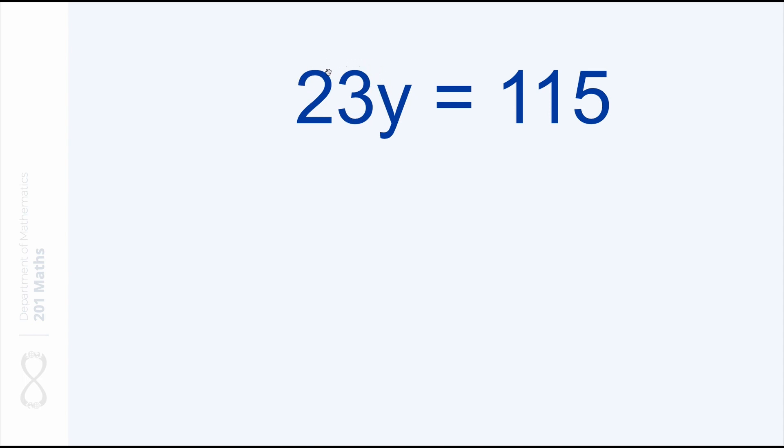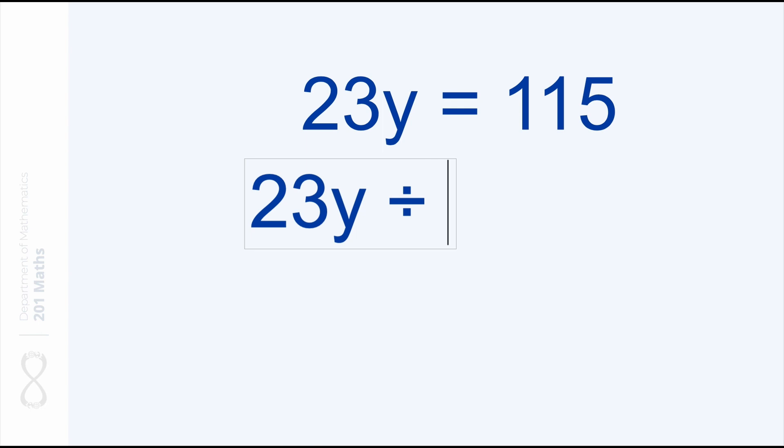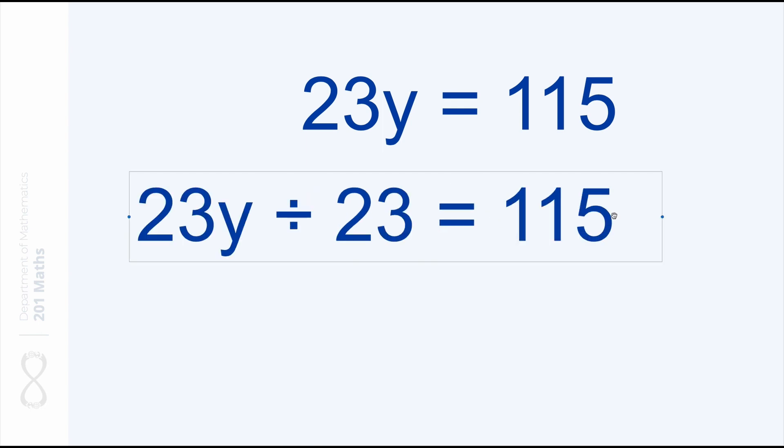So this time 23. How do we neutralize it? We neutralize it by adding a divided by 23, which is the opposite operation on the same side. Let's do that. And now on the other side we also need to apply the exact same operation, i.e. divide by 23. Now y is by itself on the left side, and on the right side we do 115 divided by 23 which gives us 5.